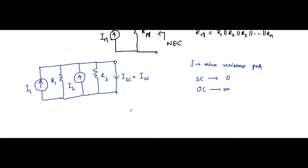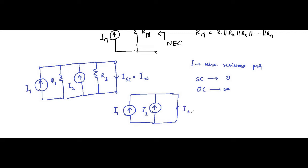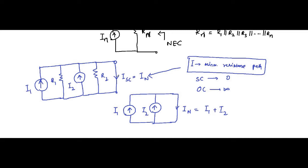That will be I1 plus I2. This is the important concept: current always takes the minimum resistance path — this short-circuited path where resistance is zero. So all of these resistors R1, R2, or any number of resistors connected, they become negligible; they go out of the picture. All of the current will flow through this short-circuited path, and that is the Norton current: I1 plus I2. So if N number of current sources are present, it will become the sum up to the Nth current.